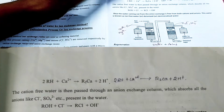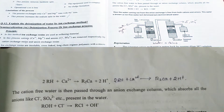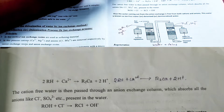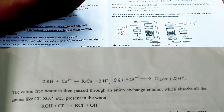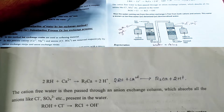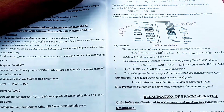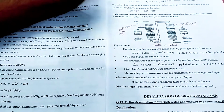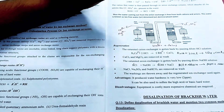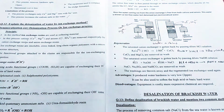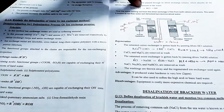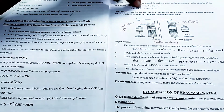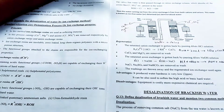Next is the anion exchanger. In the anion exchanger, where the cations have already been exchanged, we now pump the water with chlorine (Cl⁻) and SO₄²⁻ through the anion exchanger.